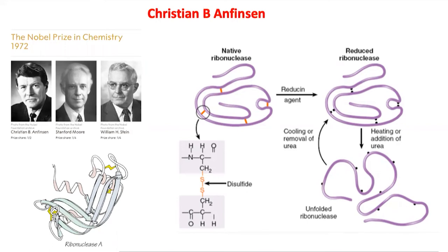Urea is just a denaturant — you need to unfold the protein in some way. The protein will remain folded in solution until you force it to unfold. To force it, you can raise the temperature to 80 degrees, at which point it will unfold, or you add denaturant. When you remove denaturant or bring the temperature back to room temperature, the protein will fold back to its final state and become active again, without any information other than the linear sequence of its amino acids.